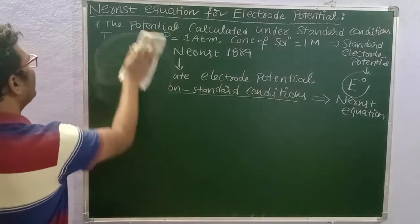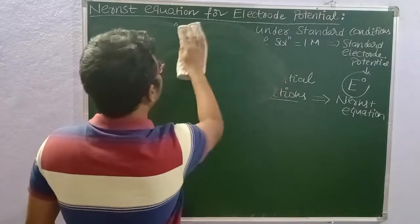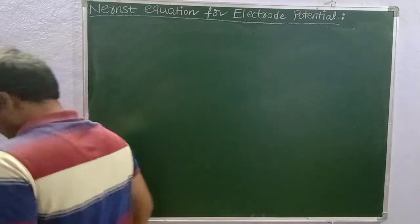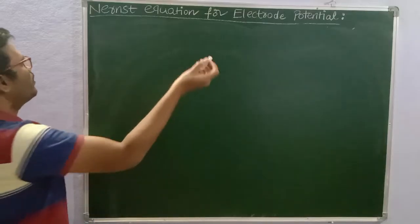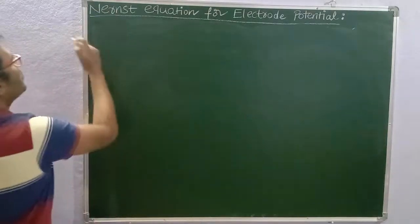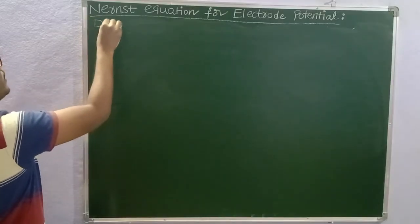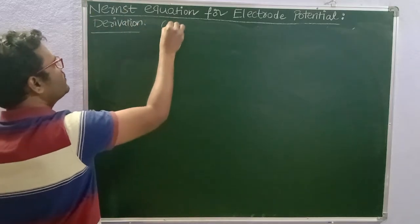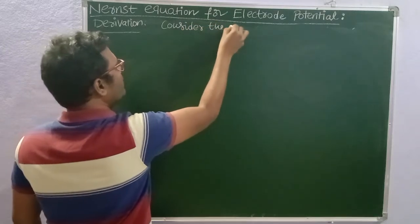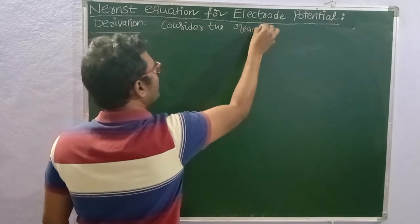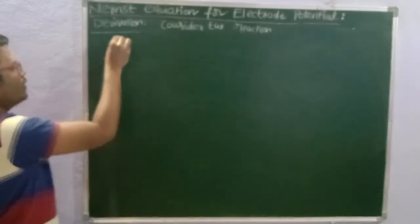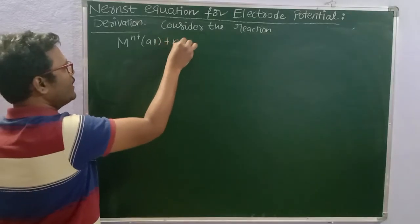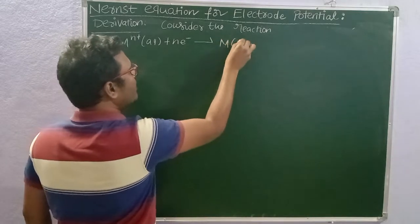Let us see the derivation of the Nernst equation. To derive the equation, we need to write a reaction. Consider the reaction: metal ion (M^n+) in aqueous solution plus N electrons gives rise to metal solid. Similarly, metal gives rise to metal ions and electrons — it is a reversible reaction.